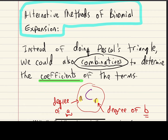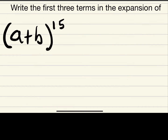When we look at n choose r, the n represents the degree of a, or the highest degree of the binomial. The r represents the degree of b, or the degree of the second variable in the binomial. Remember that as a decreases, the second variable in the binomial increases.